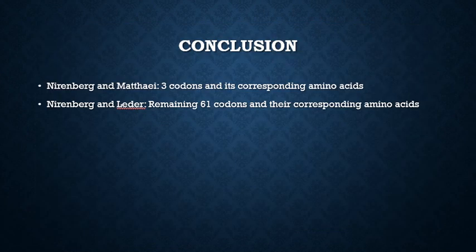In conclusion, Nirenberg and Matthaei's experiment were able to identify three codons, and Nirenberg's experiment with Leder identified the remaining 61 codons to create the genetic code we use now.